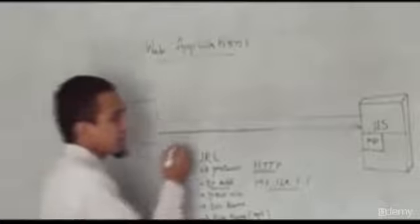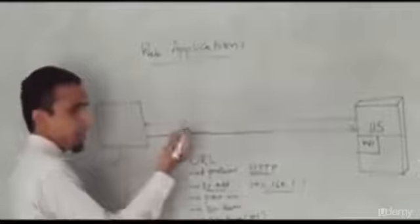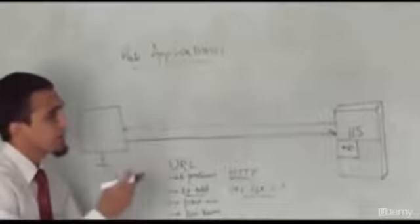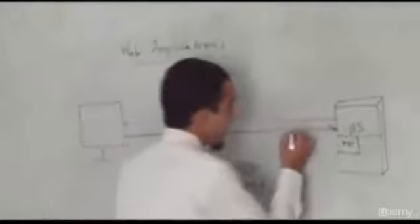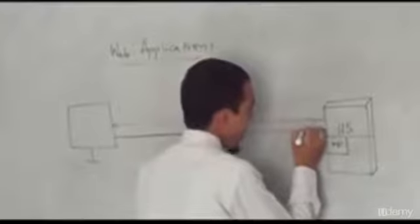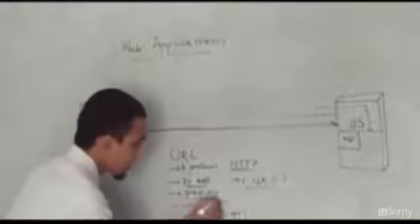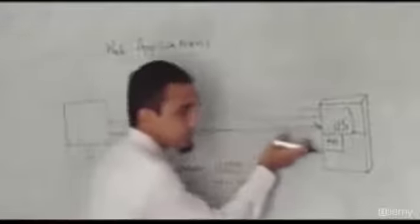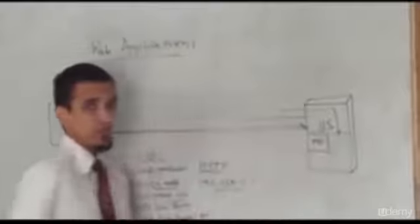Now I have reached the system. But on this system, not only IIS — there could be many other programs running. How do I identify that I want to access the application from IIS? I identify it with the help of a port number. I have got the protocol, I have reached the system, and now I say that my web application is in this program. IIS is also a kind of program — a web server.